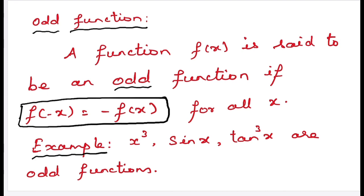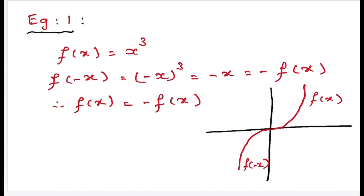Next, odd function. A function is said to be odd if it satisfies f(−x) = −f(x). For example, x³, sin x, and tan³x are odd functions. Take f(x) = x³. Then f(−x) = (−x)³ = −x³, which equals −f(x). Therefore, x³ is an odd function.